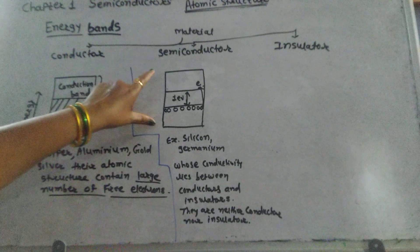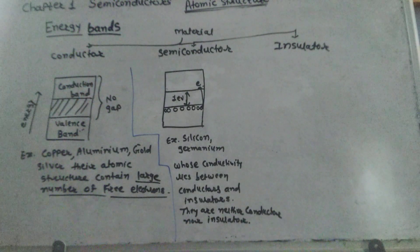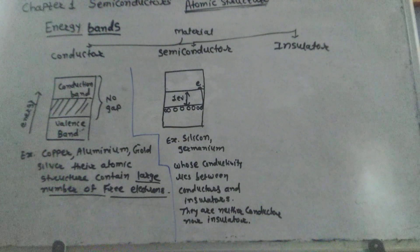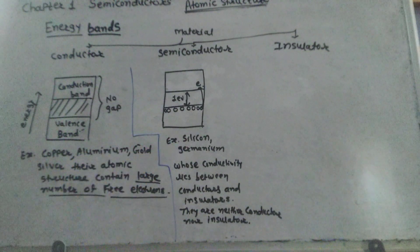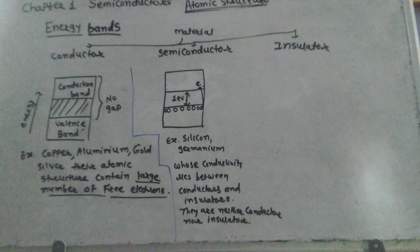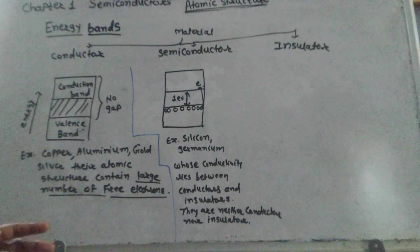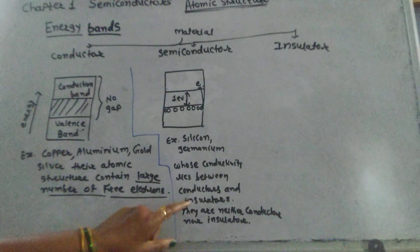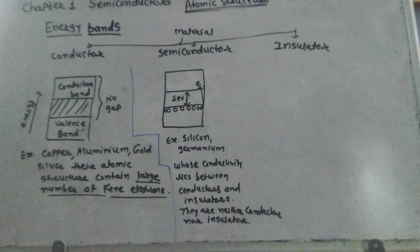The energy band diagram for a semiconductor — for example, silicon and germanium — these two are semiconductors. The conductivity of these two lies in between that of a conductor and an insulator; they are neither conductor nor insulator.